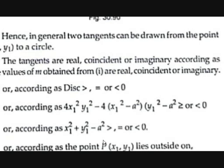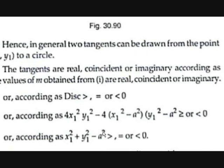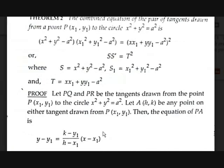Now let's see Theorem 2. The combined equation of the pair of tangents drawn from point P(x₁, y₁) to the circle x² + y² = a² is: (x² + y² − a²)(x₁² + y₁² − a²) = (xx₁ + yy₁ − a²)².